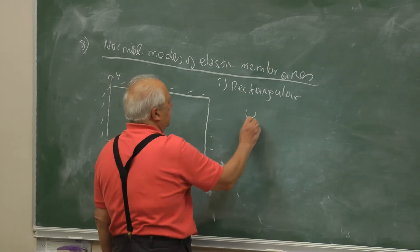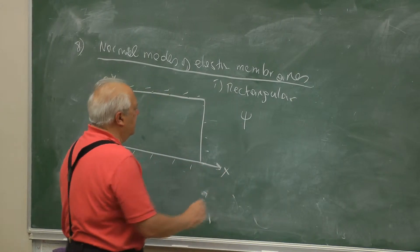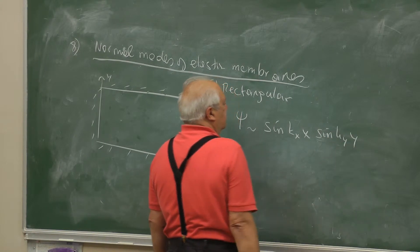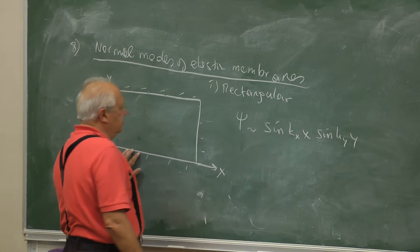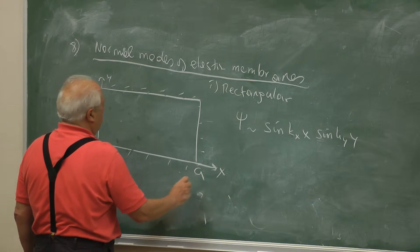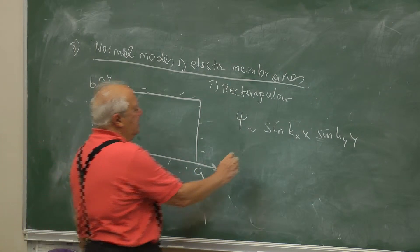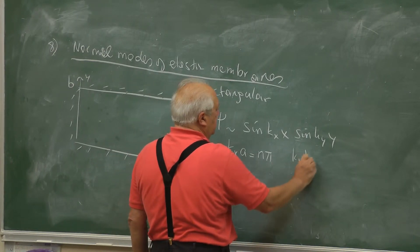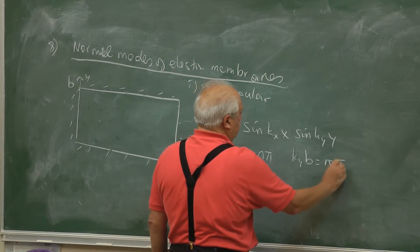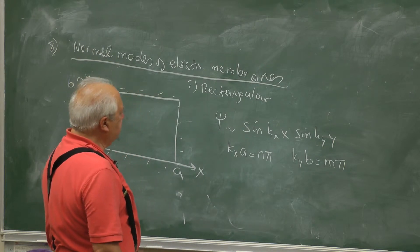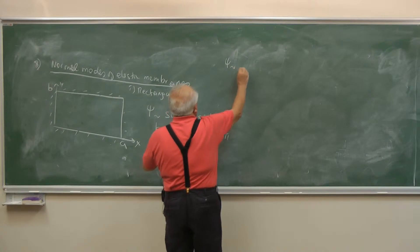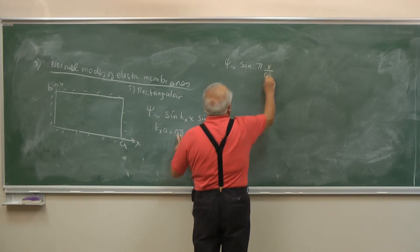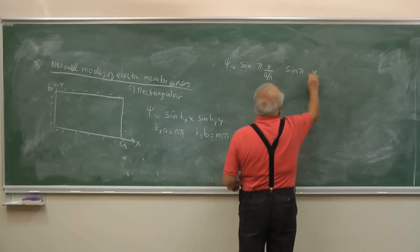We can immediately write the space function for this. It will be proportional to sin(kx·x)·sin(ky·y), such that the wave number component in the X direction gives 0 at x = a, and the other gives 0 at y = b. So kx·a = n·π and ky·b = m·π. It is better to write psi as: sin(πx·n/a)·sin(πy·m/b).